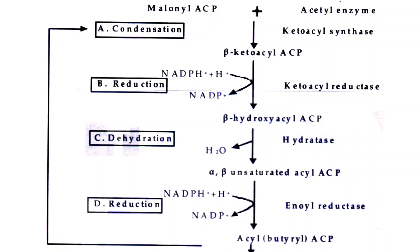The third reaction is dehydration: from beta-hydroxyacyl-ACP, one water molecule is removed to form alpha-beta-unsaturated-acyl-ACP, catalyzed by dehydratase. The fourth reaction is a second reduction: alpha-beta-unsaturated-acyl-ACP is reduced to butyryl-ACP by reductase. After this sequence of four reactions, a 4-carbon saturated compound — butyrate — is obtained, still attached to the acyl carrier protein.